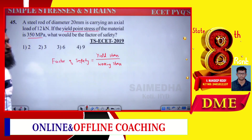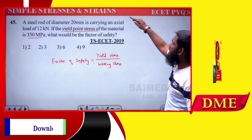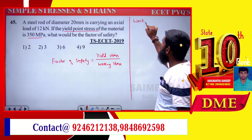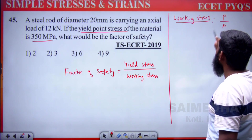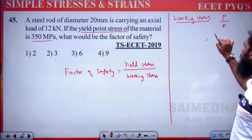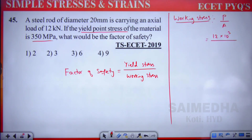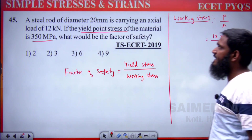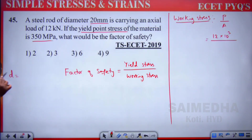Yield stress = 350 MPa. Working stress = P/A. P = 12 kN = 12 × 10³ newtons. Diameter = 20 mm. Area = (π/4) × d² = (π/4) × 20².